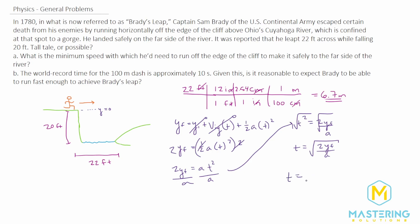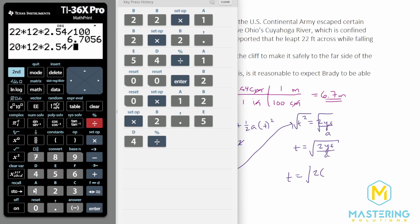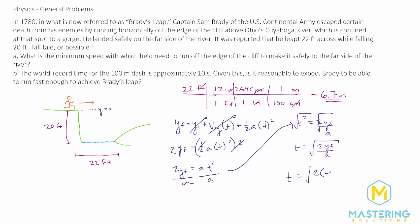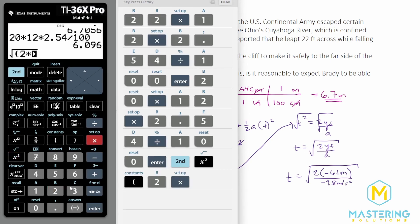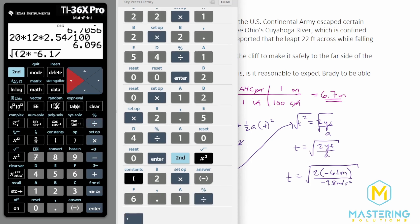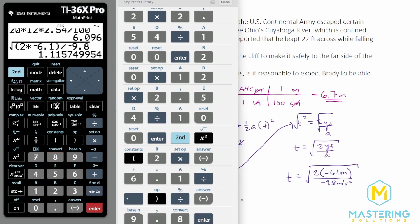When we plug in our numbers, the time Brady is in the air uses 2 times y final. The vertical drop is 20 feet, so we convert: 20 times 12 times 2.54 divided by 100 gives us 6.1 meters. Since y zero is at the top and he's falling, this is negative 6.1 meters. Dividing by g, which is negative 9.8 meters per second squared: time equals the square root of 2 times negative 6.1 divided by negative 9.8, giving 1.116 seconds.